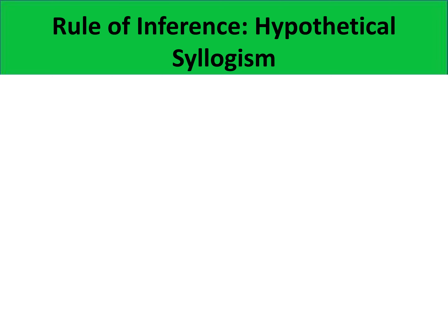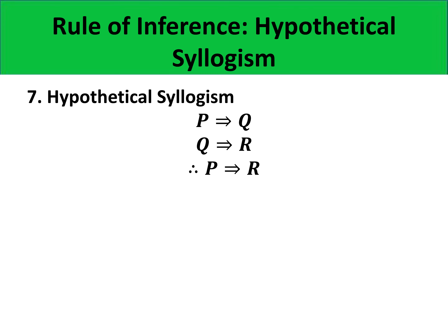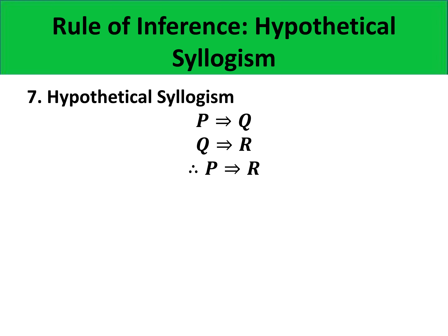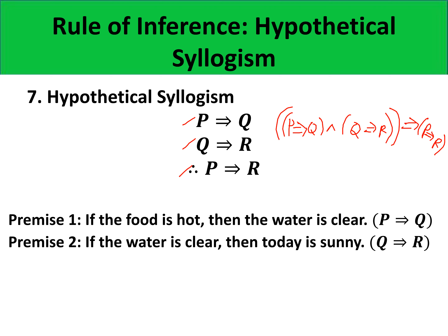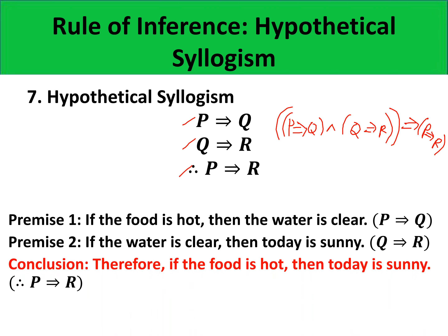The last of the seven rules of inference is hypothetical syllogism. Its form is P implies Q as the first premise, Q implies R as the second premise, and therefore P implies R as the conclusion. Since this is known to be valid, its propositional form — P implies Q, and Q implies R implies P implies R — must be a tautology. For example, premise one: if the food is hot, then the water is clear (P implies Q). Premise two: if the water is clear, then today is sunny (Q implies R). Our conclusion is: therefore, if the food is hot, then today is sunny (P implies R).